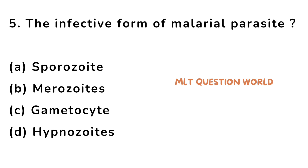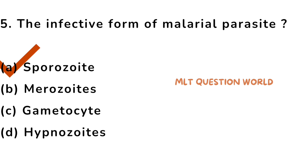Question number 5. The infective form of malarial parasite: option A. Sporozoite, option B. Merozoite, option C. Gametocyte, option D. Hypnozoites. Which of the following is the infective form of malarial parasite? The right answer is option A, Sporozoite. The infective form of malarial parasite is Sporozoite.